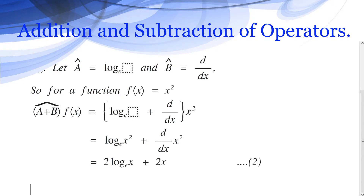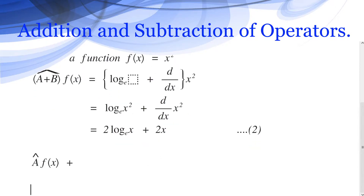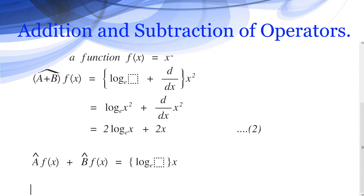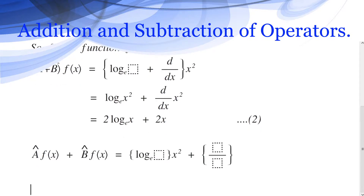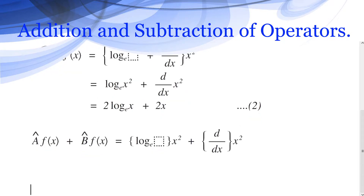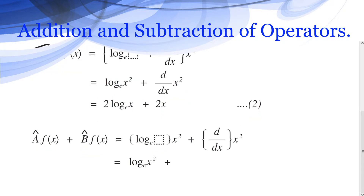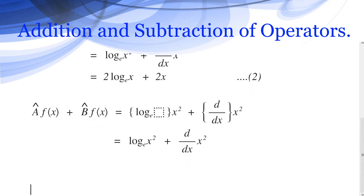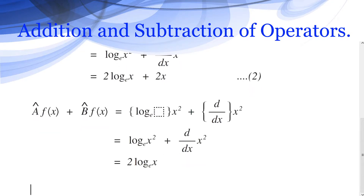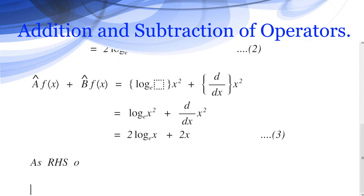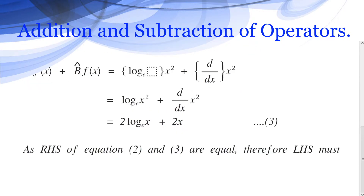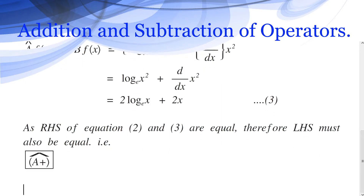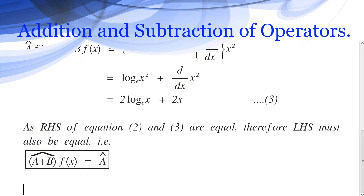For Âf(x) + B̂f(x) = log_e(x²) + d/dx(x²) = 2·log_e(x) + 2x. This is equation 3. Since the right-hand sides of equations 2 and 3 are equal, the left-hand sides must also be equal. That is, (Â + B̂)f(x) = Âf(x) + B̂f(x).